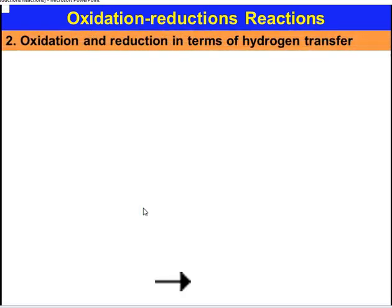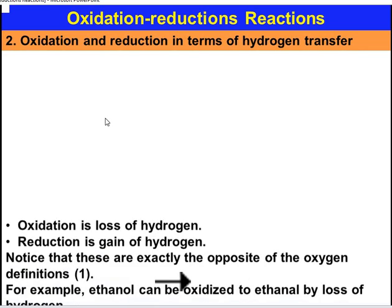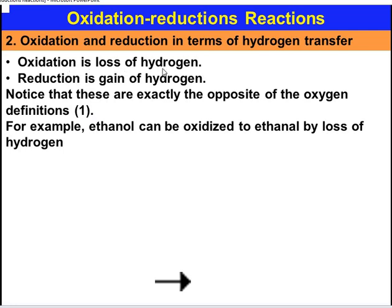Oxidation and Reduction in terms of Hydrogen Transfer. The process of loss of Hydrogen is Oxidation, and Reduction is the process of gain of Hydrogen. Whenever a substance gains Hydrogen, this process is called Reduction. Notice that these are exactly opposite to the Oxygen definitions — addition of Oxygen is Oxidation and removal of Oxygen is Reduction.